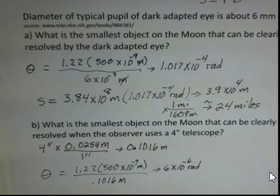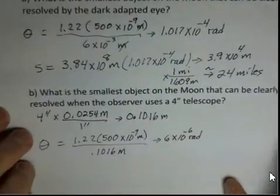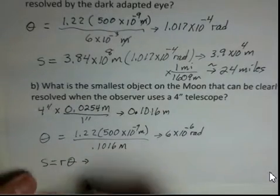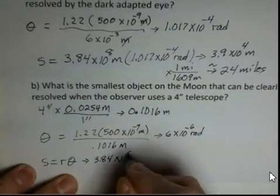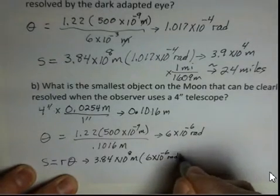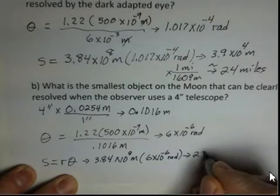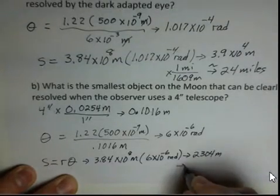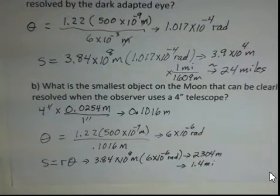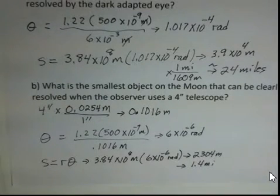Now doing S = Rθ: we have 3.84 × 10⁸ meters, but now with the smaller angle of 6 × 10⁻⁶ radians, we end up with a smaller number of meters — 23.04 meters. Converting to miles by dividing by 1,609, that's 1.4 miles across. So by use of a telescope, you can now see craters as small as 1.4 miles across. There may not be boulders 1.4 miles across on the moon's surface, but talking about craters, that's what you could resolve.